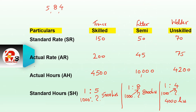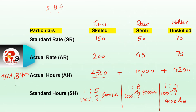Total actual hours: 4,500 + 10,000 + 4,200 = 18,700. Total standard hours: 5,000 + 8,000 + 4,000 = 17,000. These totals are what we need for further calculations.